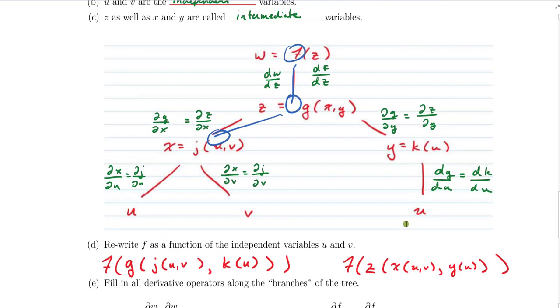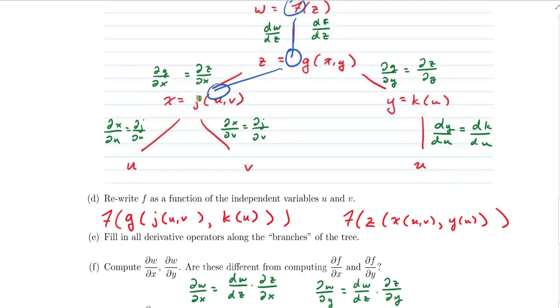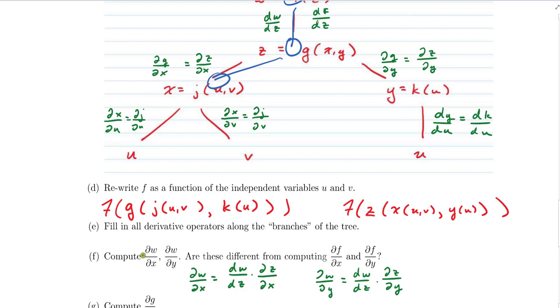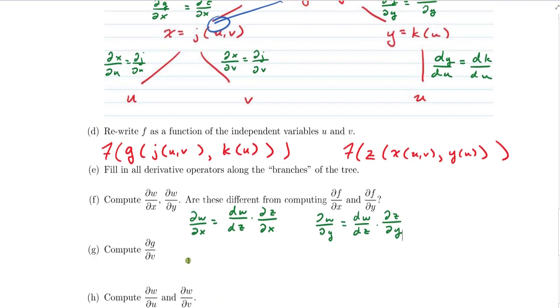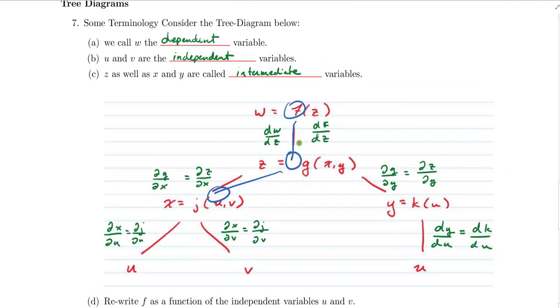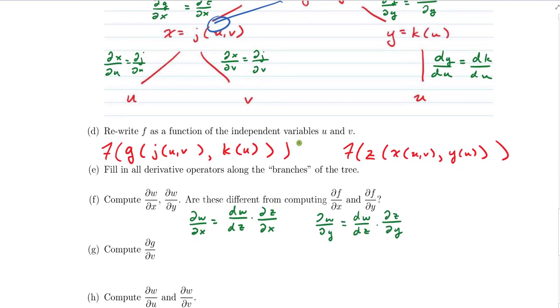Whenever I go down a single branch, and there's no branching possible, I'm using the single variable derivative. And if ever I am moving along a branch where I have two possible branches or more to split off from, then I'm going to use the partial derivative. So notice here, I wasn't asking you for the partials with respect to the ultimate independent variables. I had to just stop a certain leg along the way.